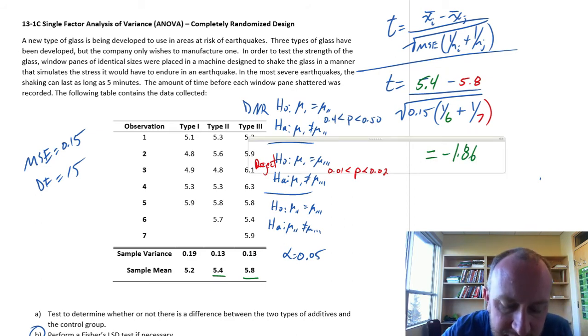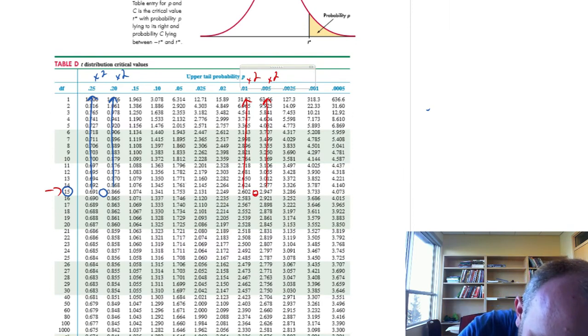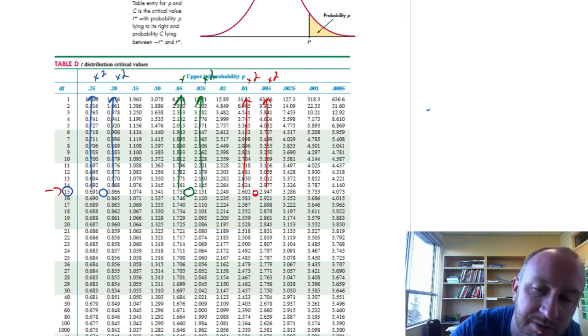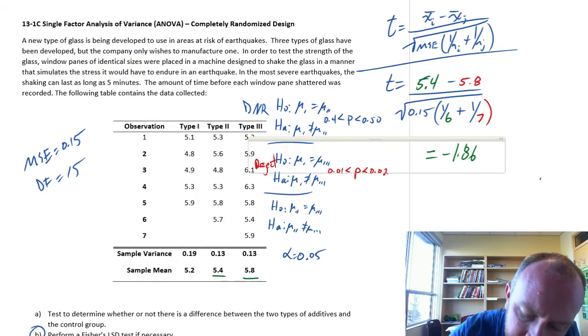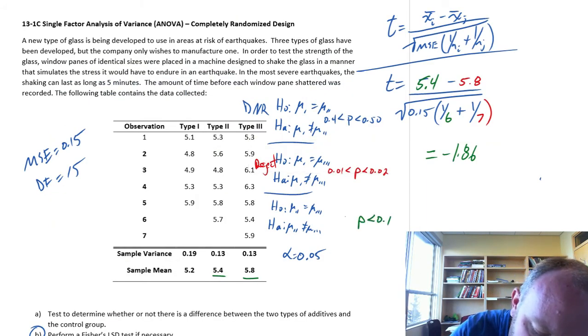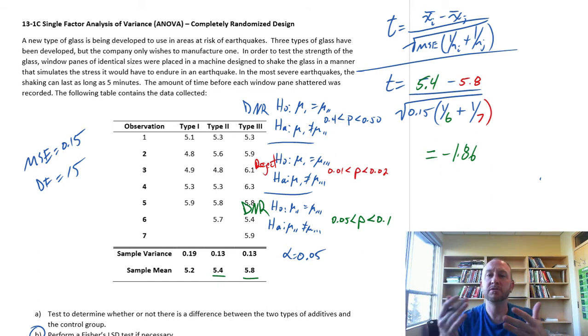1.86, coming back to our t-distribution. 1.86 is in here, so my two probabilities are here. Again, we times these by two. These are all two-tailed tests, so that's between 0.05 and 0.1. P-value here is between 0.1 and 0.05. So this one we do not reject. Okay, so we have two do not rejects, and we have one reject. So what does this mean?